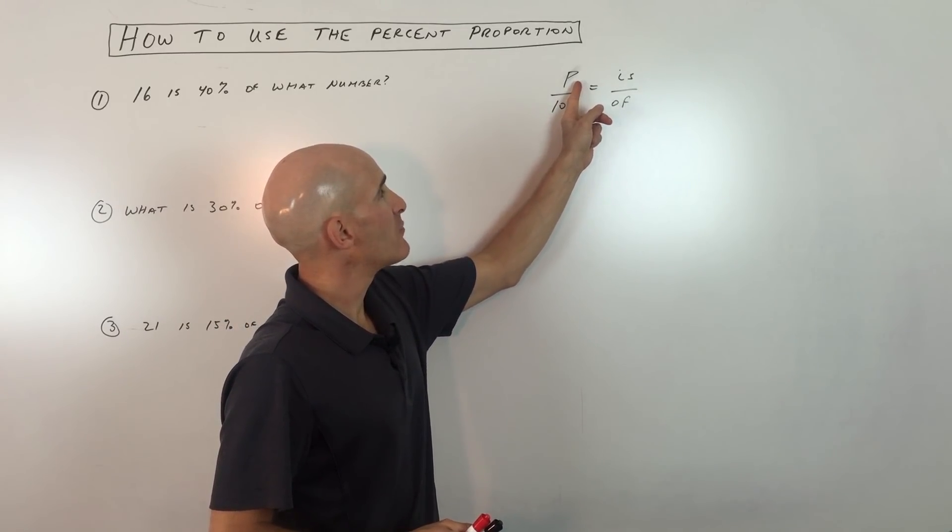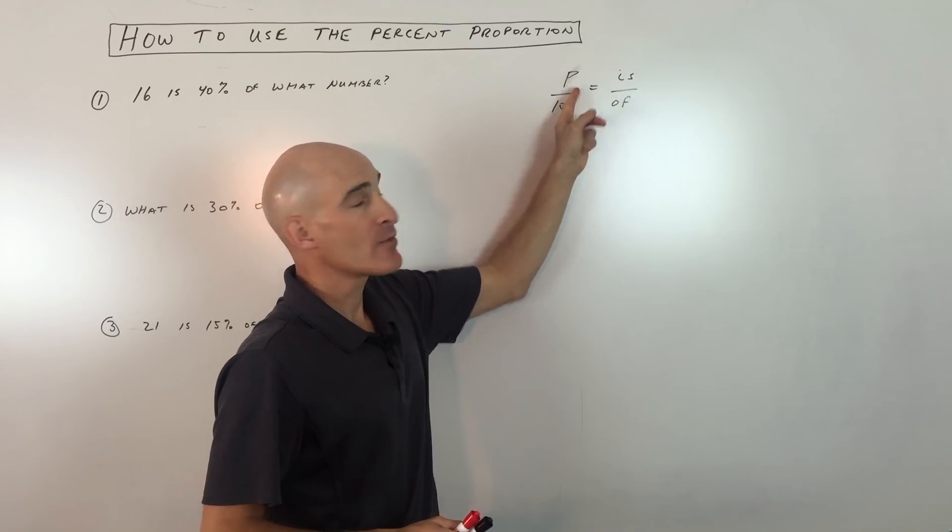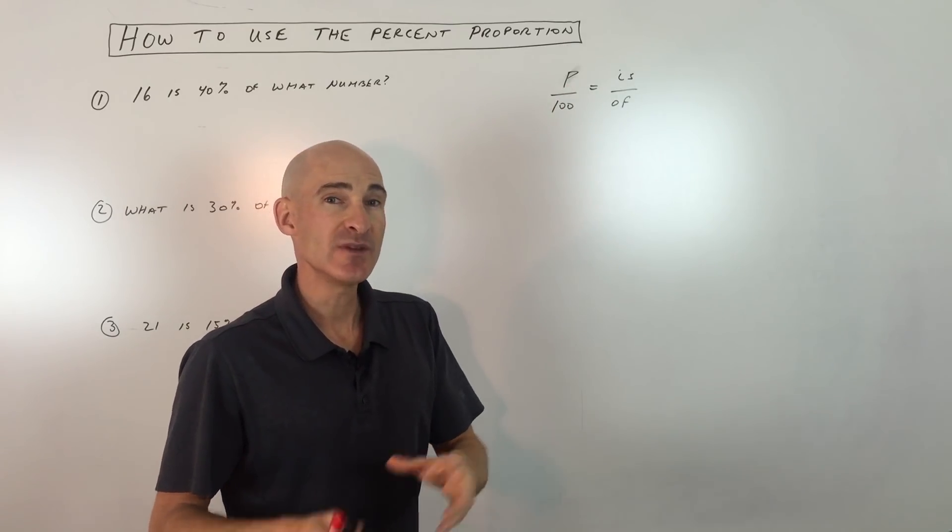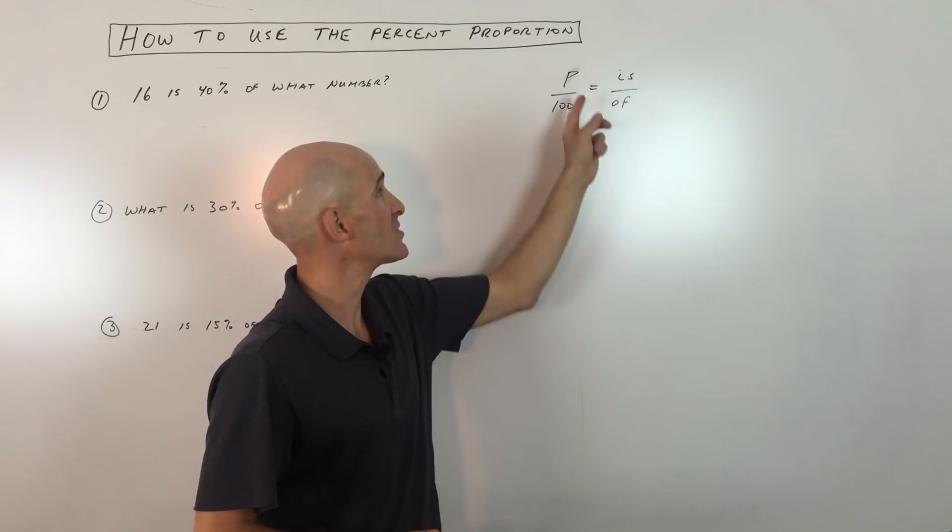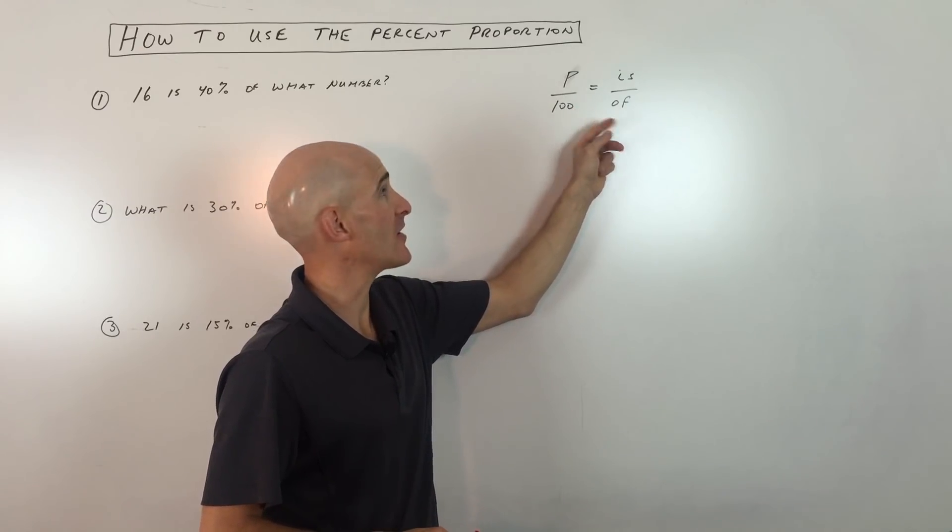So what we have here is P over 100, and P represents the percent. Percent means per hundred, meaning something divided by 100. So like 40% is actually 40 parts out of 100 parts.